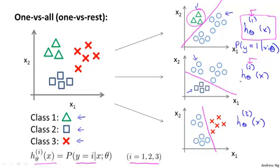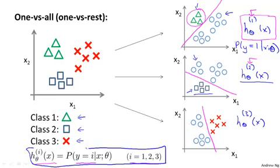And similarly, this is treating the square class as a positive class, and so it's trying to estimate the probability that y is equal to 2, and so on. So we now have three classifiers, each of which was trained to recognize one of the three classes.